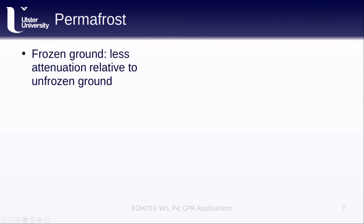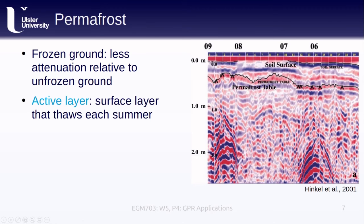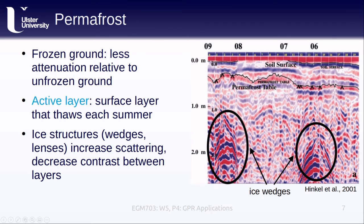Frozen ground has less attenuation of radar signals relative to unfrozen ground, making GPR a great tool for studying permafrost. The active layer is the surface layer that thaws each summer and refreezes during the winter; below it, permafrost remains frozen throughout the year. Because the active layer has different physical properties compared to permanently frozen soil, the boundary between the two can be mapped using GPR — here shown by a black line around 20 to 30 centimeters depth. Within permafrost, we can also see ice structures such as ice wedges or ice lenses, which appear as very strong scatterers in the radargram.